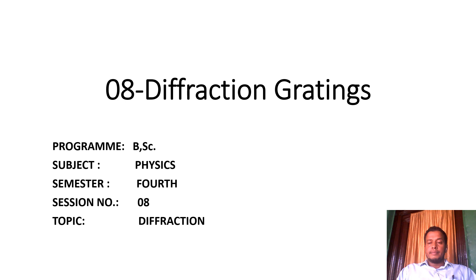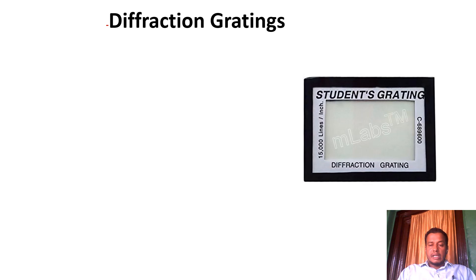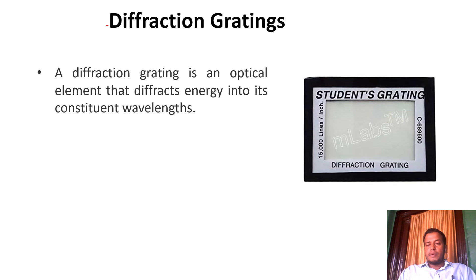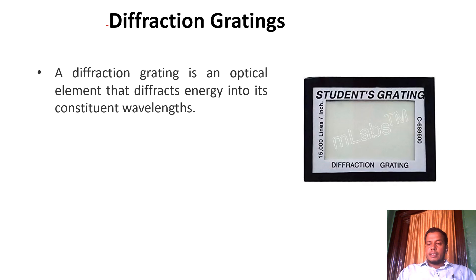We studied in previous sessions that light passes through single slits, double slits, and circular apertures. Light can also pass through multiple slits. The arrangement of multiple slits is called a diffraction grating. A diffraction grating separates light energy into its constituent wavelengths — since light is polychromatic, it passes through the grating and is separated into its component wavelengths.